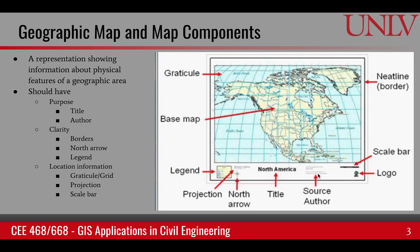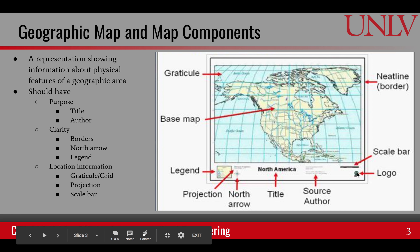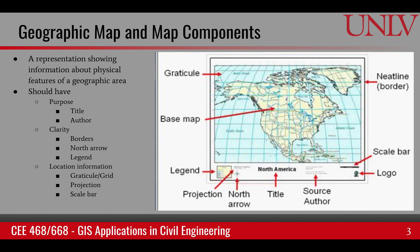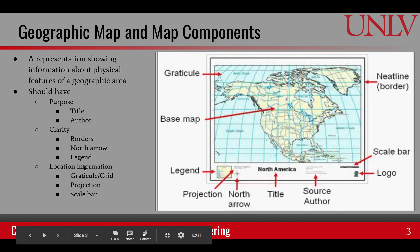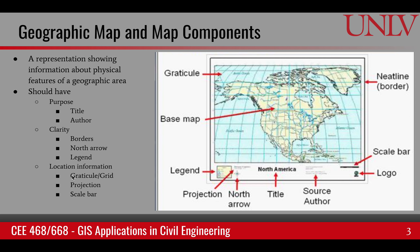The second aspect of a map is clarity. That is reflected by a few things that should be present. First, it should have a clear border defining the edge of the map. Then it should have a north arrow showing which way is north. It should also have a legend showing the colors, lines, and their explanations. Additionally, there are some pieces of information that are not necessary but helpful — they relate to the ability to locate points on the map.